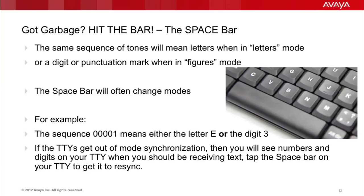So how do we deal with this problem? Got garbage? Just hit the space bar. Because the same sequence of tones can mean letters when in letters mode, or digits and punctuation when in figures mode, you may have to hit the space bar to change modes and get in sync. For example, the sequence 00001 can mean either the letter E in letters mode, or the digit 3 in numbers mode. There's no synchronization or error correction, so if you happen to miss the mode change, the TTY can get out of synchronization. You'll typically see numbers and digits on your TTY when you should be receiving text. Fixing the problem is easy — just tap the space bar on your TTY, and that'll cause it to re-sync into the proper receive mode.